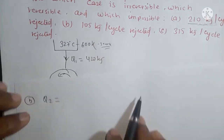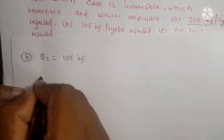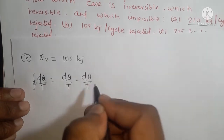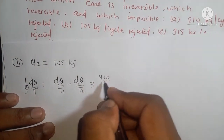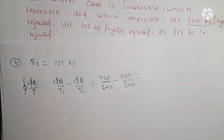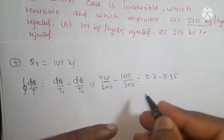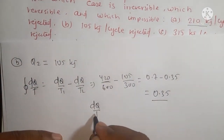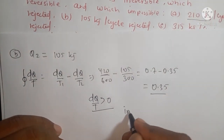For Case B, Q2 = 105 kJ per cycle. The cyclic integral dQ/T = 420/600 − 105/300 = 0.7 − 0.35 = 0.35. Since dQ/T = 0.35, which is greater than zero, this process is impossible.